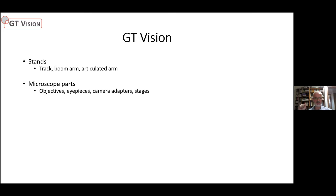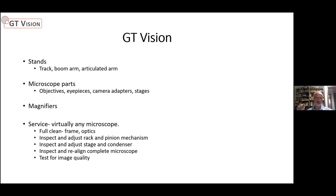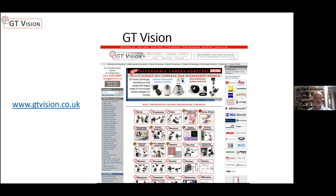We also have a range of microscope stands — track stands, boom arms, and articulated arms — plus magnifiers, and we can service virtually any microscope: clean, inspect, adjust, align, and test it. For more information, visit gtvision.co.uk — you can browse stereo and biological microscopes, our range of Leica microscopes, cameras, and other options. Click 'Need Help' to send us a message, or email sales@gtvision.co.uk, or call us. We're happy to help with any inquiry.